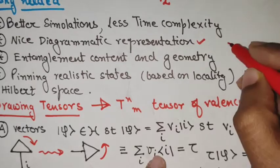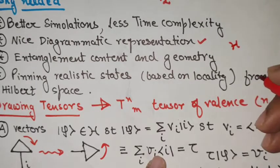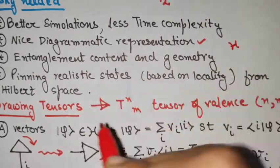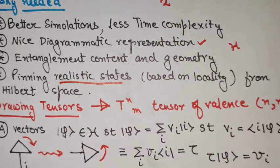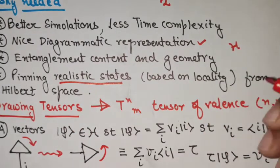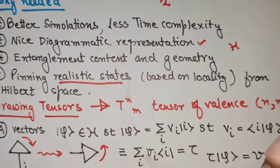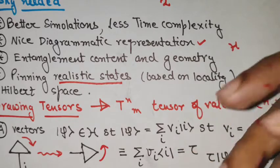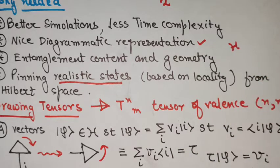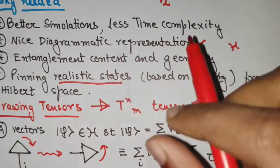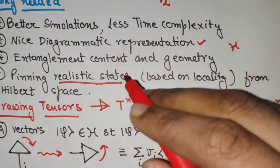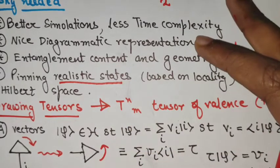Given a Hamiltonian present in nature, the realistic states suited for that Hamiltonian — whether it has a strong coupling parameter, nearest-neighbour coupling, or next-nearest-neighbour coupling — there are locality arguments we can give to say that the required state will actually belong to a very small subclass of that Hilbert space. To understand this smaller subclass of a large Hilbert space, we can track them using tensor networks.